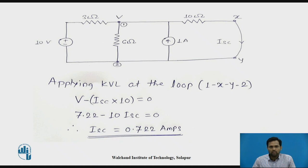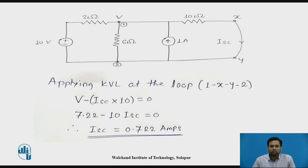The next step is to find ISC by applying KVL at the loop formed by node 1, node X, node Y, and node 2. The equation obtained is V minus ISC multiplied by 10 equals 0. Substituting V equal to 7.22 gives ISC equal to 0.722 amperes.